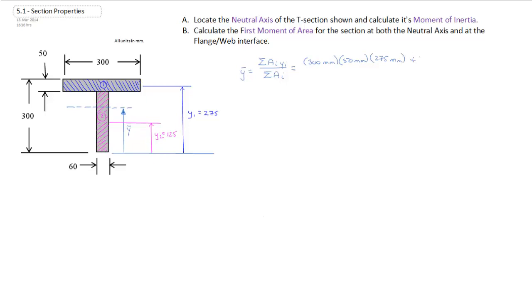And to that, we add the area of 2. So the area of 2 we said was 250 millimeters times its thickness of 60 millimeters multiplied by y_2, which is 125 millimeters. Let me underline that.